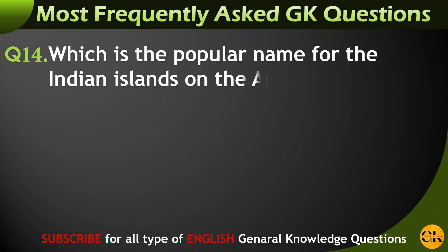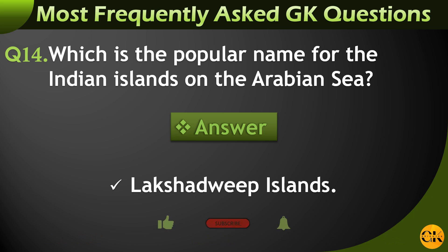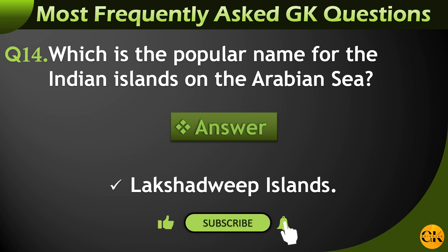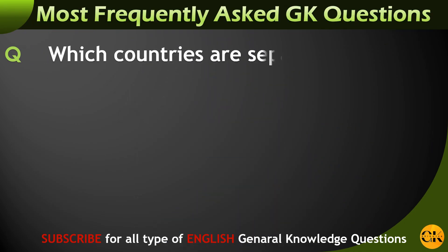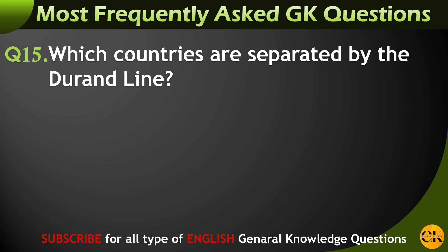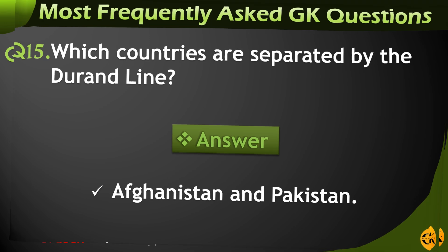Which is the popular name for the Indian islands on the Arabian Sea? Lakshadweep Islands. Which countries are separated by the Durand Line? Afghanistan and Pakistan.